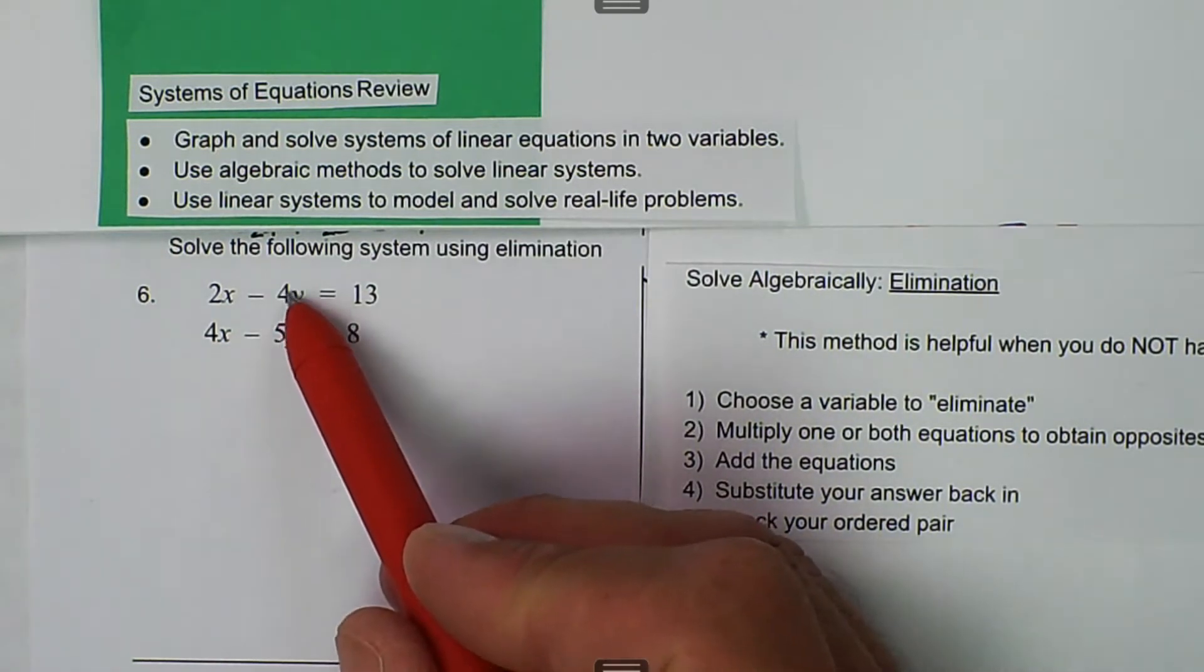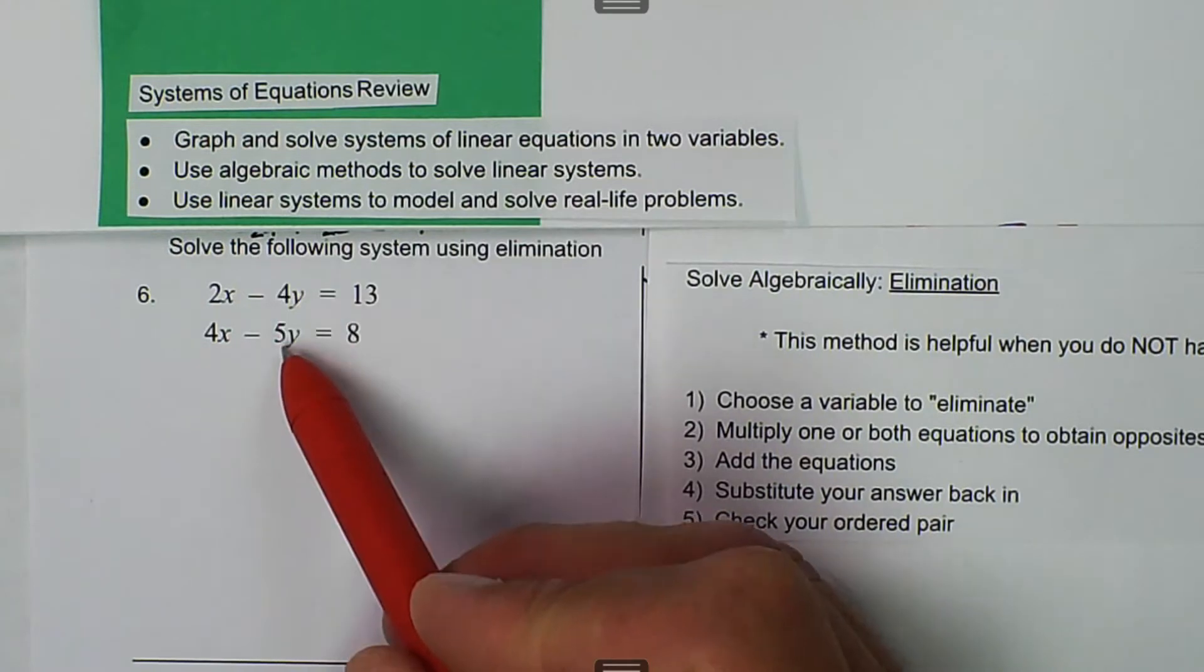And then here, I have a 4 and a 5. The easiest way to get that to cancel out would be to multiply and get them to be coefficients of 20.